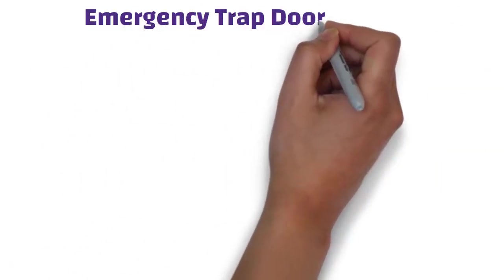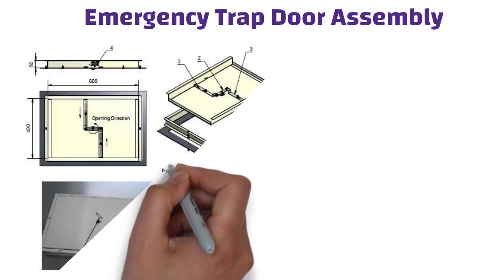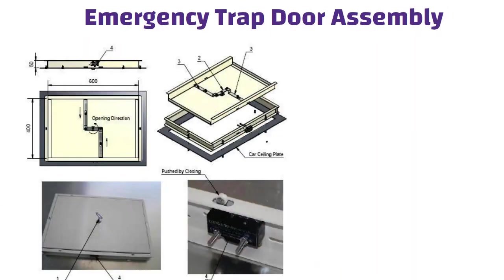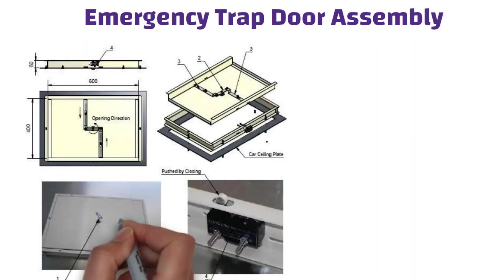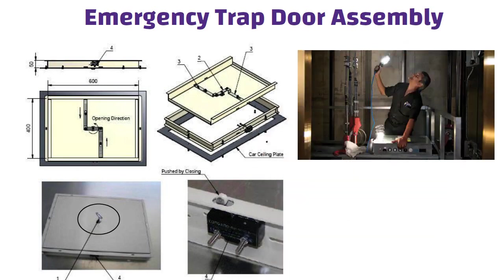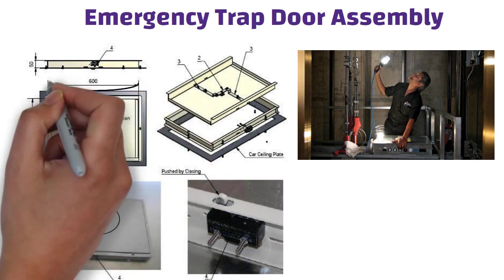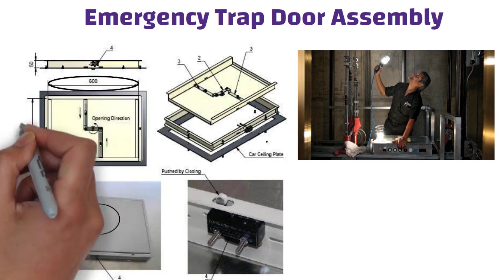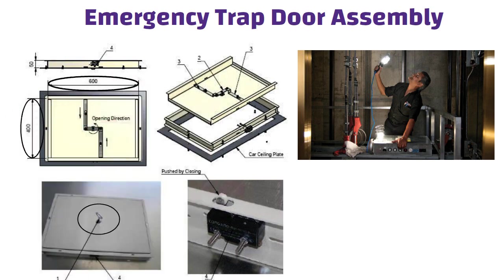Emergency trap door assembly. The emergency trap door can be easily opened from inside the car using a triangular key, and from outside the car without a key by turning the link to pull the locking arms. Normally the emergency trap door size is 600 x 400 mm to permit the rescue and evacuation of passengers.